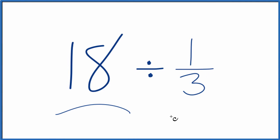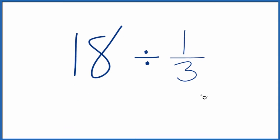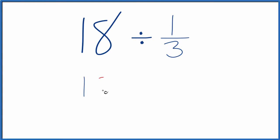Let's divide 18 by 1 third, and here's how we'll do it. Let's think of this as 18 over 1. It's still 18, it's just now we have the start of a fraction. That's kind of helpful.